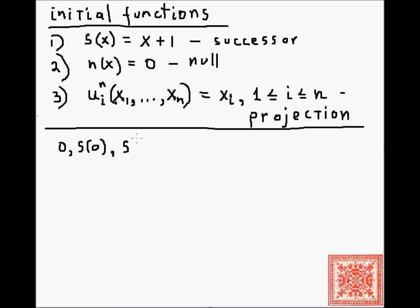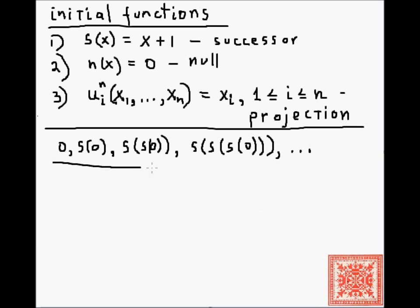Using just the successor and null functions together with composition, we can effectively construct each and every natural number. We start from zero (the null function), then the successor of zero is one, the successor of the successor of zero is two, the successor of the successor of the successor of zero is three, and so forth.